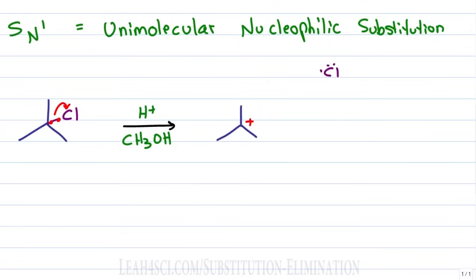The Cl⁻ dissolves in solution as an unreactive spectator ion and we have a carbocation intermediate. This is the clue for an SN1 reaction — a carbocation intermediate that is slow to form and is the rate-determining step of the reaction.